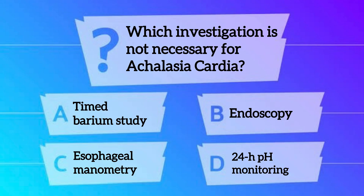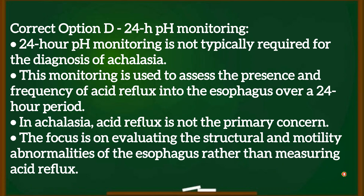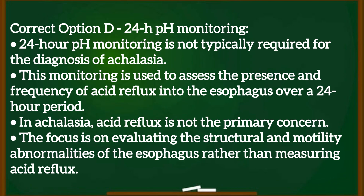The next question: which investigation is not necessary for achalasia cardia? Options are: A, timed barium study; B, endoscopy; C, esophageal manometry; D, 24-hour pH monitoring. The right answer is 24-hour pH monitoring. This monitoring is used to assess the presence and frequency of acid reflux into the esophagus over a 24-hour period. In achalasia, acid reflux is not the primary concern; the focus is on evaluating structural and motility abnormalities of the esophagus rather than measuring acid reflux.